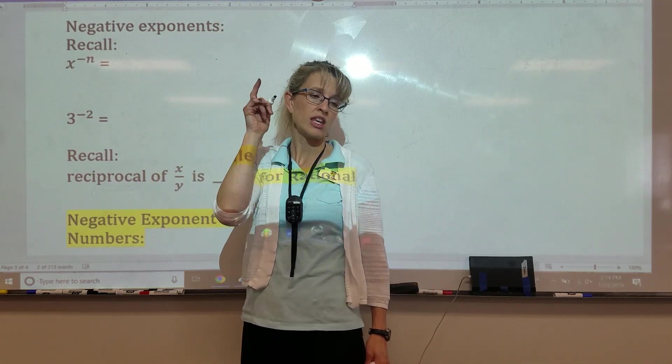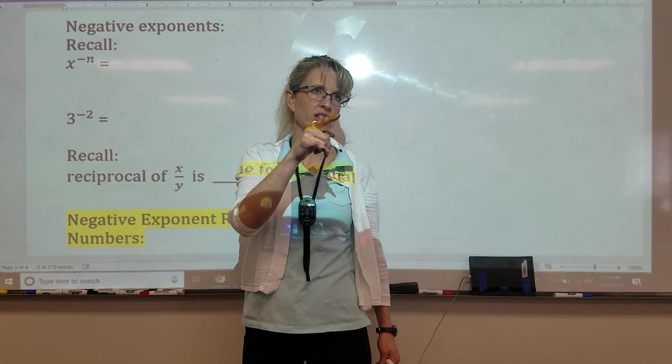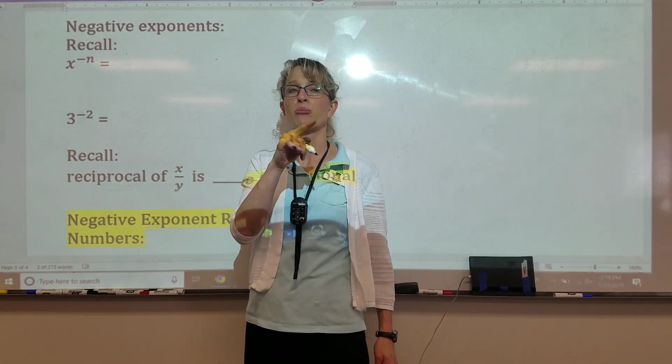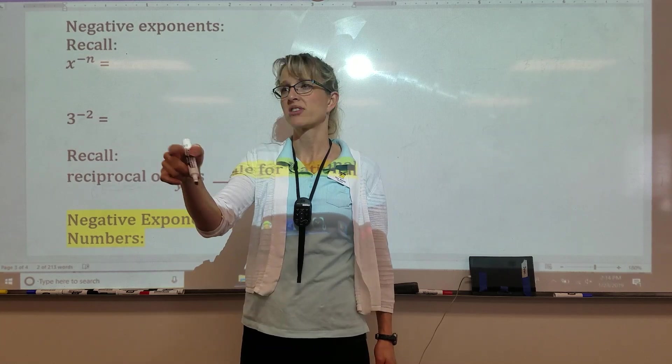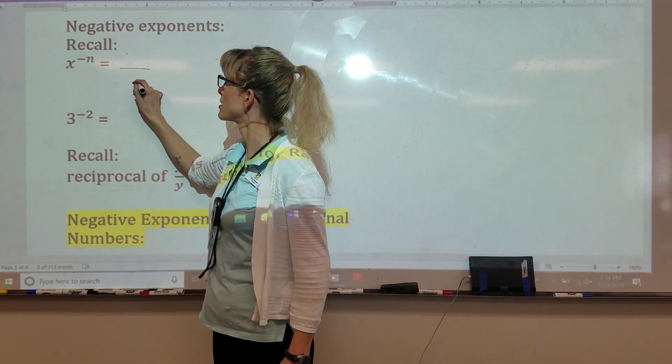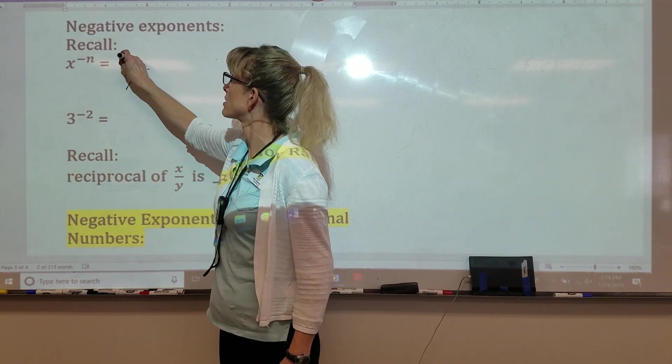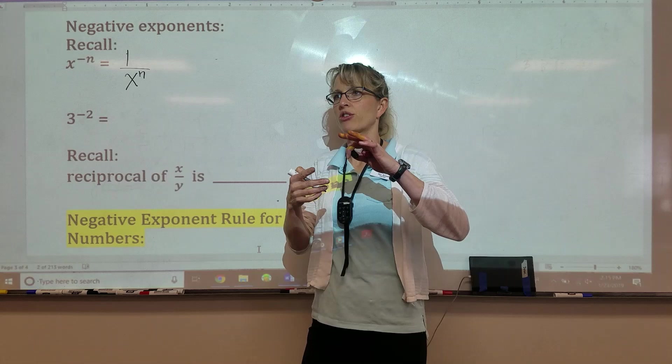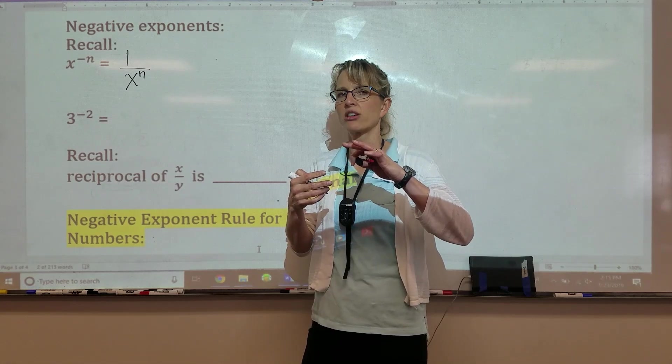True, if we had a digit, but we don't have any digits to work with. We just have a variable. Can I rewrite the variable with a positive exponent? What were you going to say, Ethan? You want to put x to the n over, so 1 over x to the n. So if you put it in the denominator, the exponent turns positive.